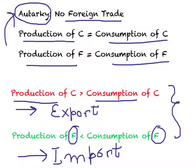We looked at equilibrium in autarchy with an increasing cost PPC. In subsequent lectures, we will also look at the constant cost PPC and the decreasing cost PPC, and how equilibrium looks in those cases. This completes our discussion of this topic. Thank you for your time.